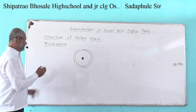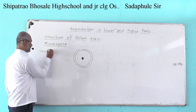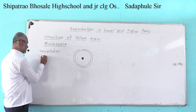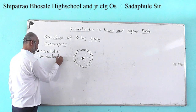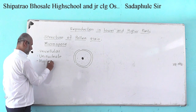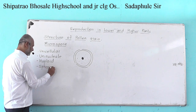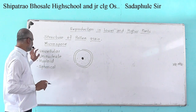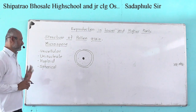Each pollen grain is a unicellular structure. It is uninucleate, always haploid, and generally spherical in shape. So pollen grains are unicellular, uninucleate, haploid, and generally spherical in shape.